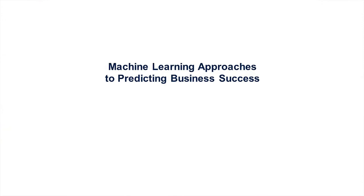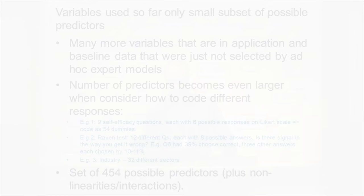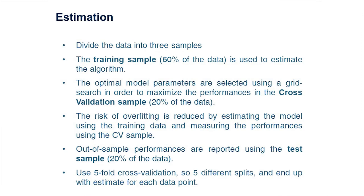Can machine learning do better? We used only a small subset of variables for the economist model, but machine learning can consider 450 variables — including granular information like exactly how you answer each of 12 Raven test questions, not just the total score. We used a 60/20 training/validation split with 5-fold cross-validation, producing out-of-sample predictions for everyone without using them to fit their own model.